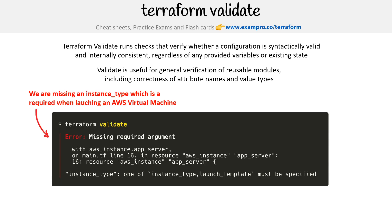Here's an example where I had some code and there was a problem — it's saying you're missing an argument, because for an AWS instance, you always have to specify an instance type.